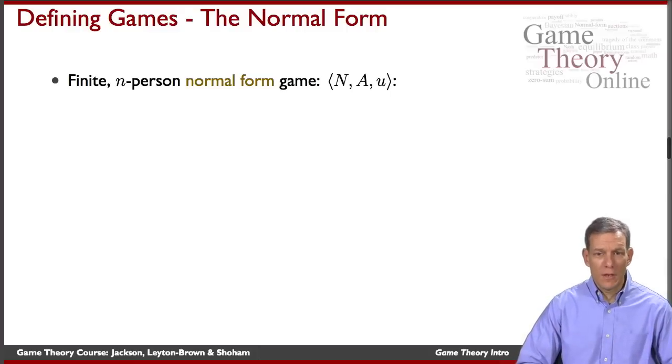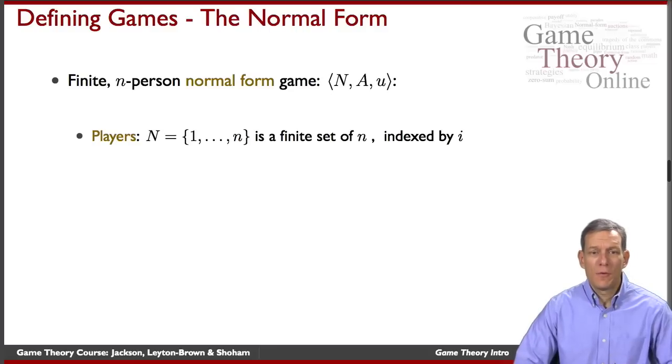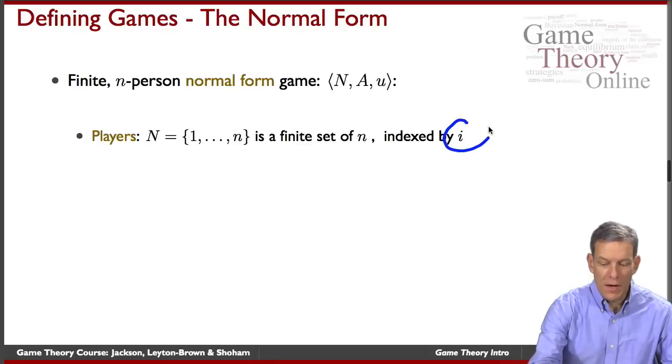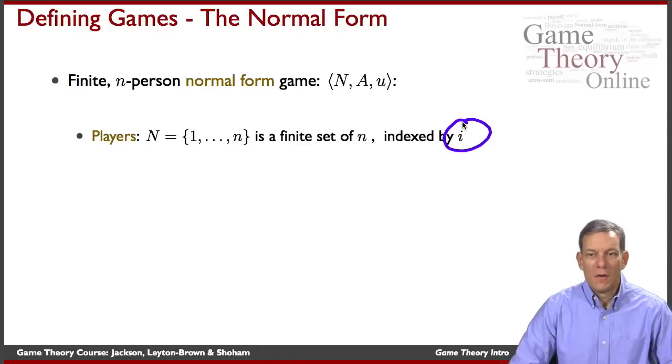Okay, so normal form games. What are the key ingredients? Again, players. We're going to generally think of finite sets of players. One through n, little n will represent the set of players. Generally we'll index these things by an i, so we'll use a little i to represent a generic player.